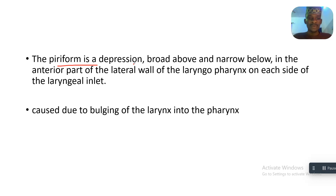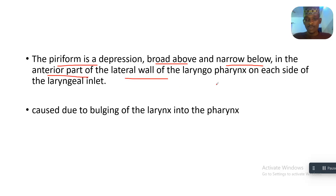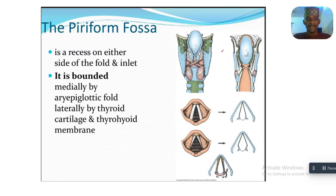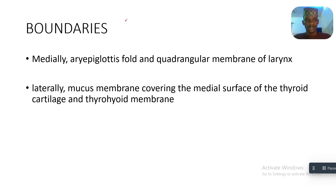The piriform fossa is a depression — it is broad above and narrow below. It forms the anterior part of the lateral wall of the laryngopharynx on each side of the laryngeal inlet. It is caused by the bulging of the larynx into the pharynx.